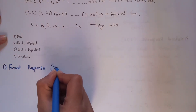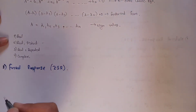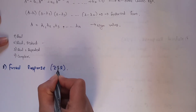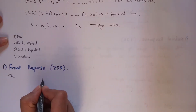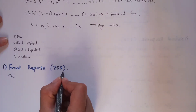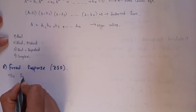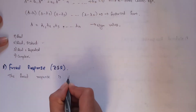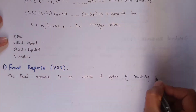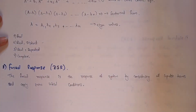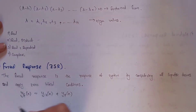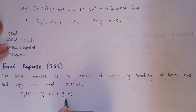Now let's discuss the forced response, also called the zero-state response. This means we consider the input but we do not consider the states — initial conditions are set to zero. The forced response is the response of the system by considering all input terms and applying zero initial conditions. It consists of a homogeneous part y_h(n) and a particular solution y_p(n).